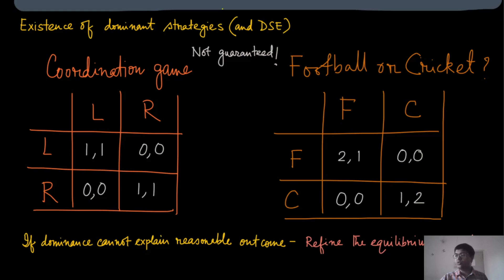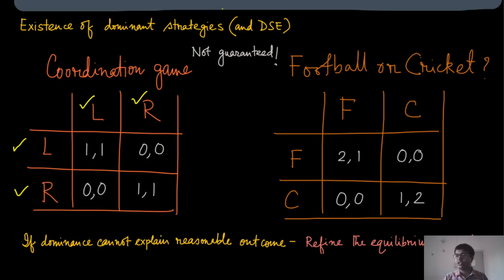Let us look at two examples. The first is called the coordination game. Imagine two drivers driving on opposite sides of the road, coming towards each other. Both can drive on the left or both on the right, in which case they pass without colliding. But if one drives left and the other drives right, they come face to face and cannot move. The payoff indicates that whenever both coordinate, they get a positive payoff; when not coordinating, they get zero.